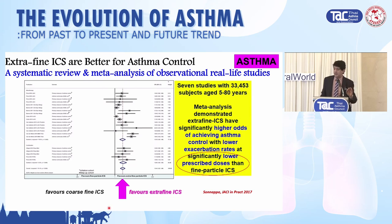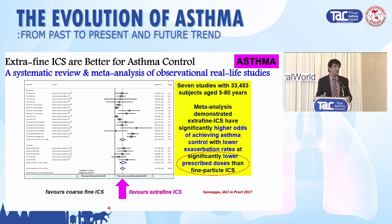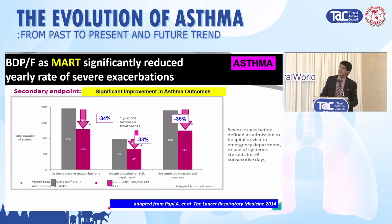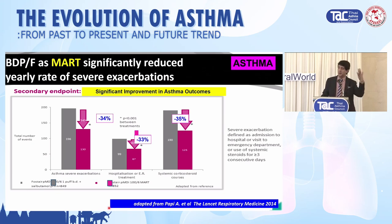The meta-analysis showed extra fine achieves lower exacerbation rates and lower overall ICS dose compared to large coarse particle. The systematic review in real life confirms extra fine achieves greater advantage. Furthermore, maintenance and reliever therapy with beclomethasone-formoterol achieves a one-third improvement in severe exacerbations, a one-third improvement in hospitalizations, and a one-third reduction in systemic corticosteroid courses — from a large study by Alberto Papi in Lancet Respiratory Medicine.